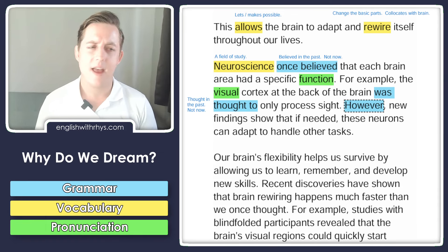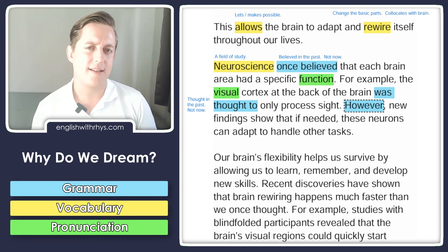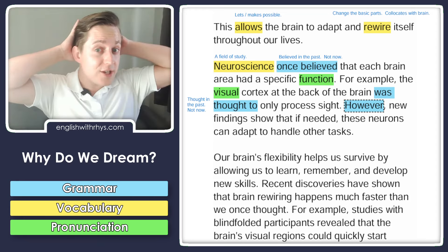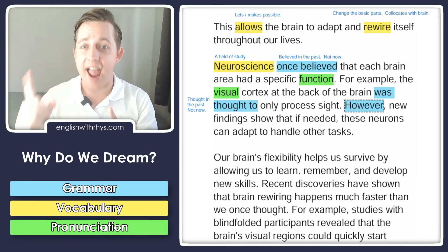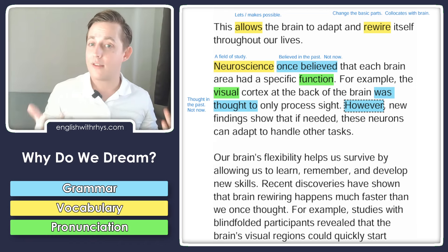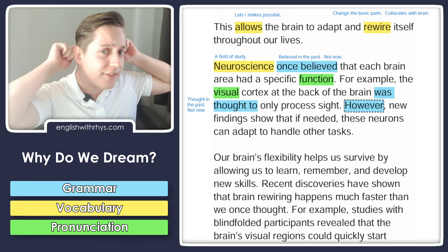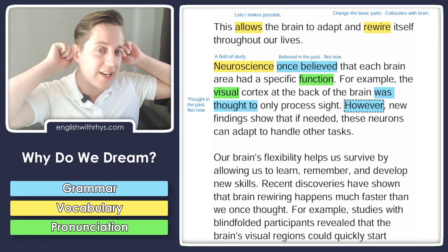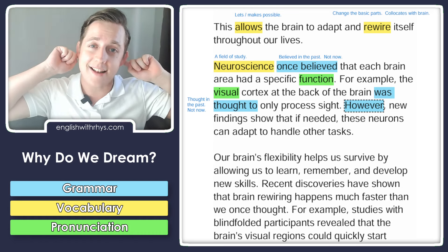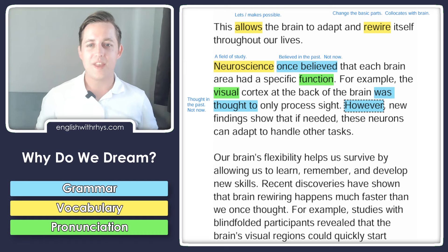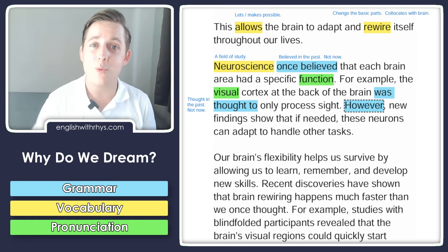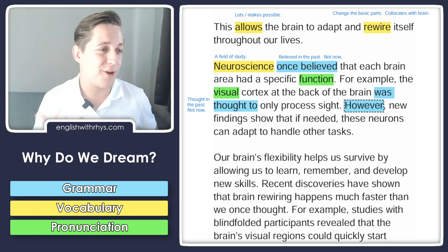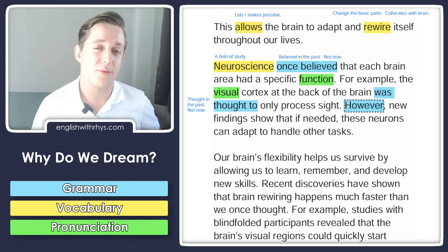Here's the argument: in the past, they believed the visual cortex could only deal with sight. But however, in contrast, findings have shown that if needed, these neurons in the visual cortex can adapt to handle other tasks. So 'however' shows us the change over time. I think it's pretty cool that we can do so much with just a little word.